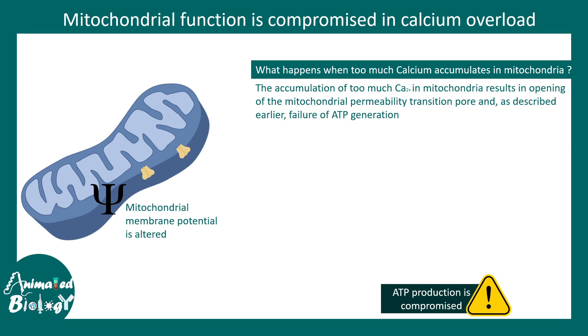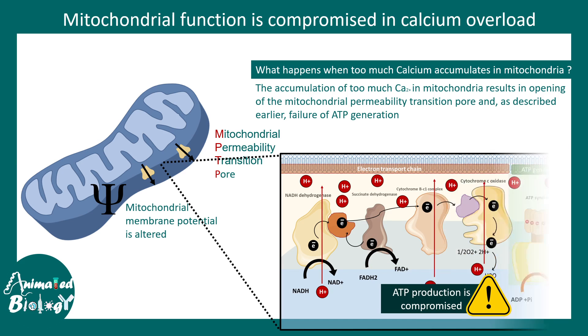ATP production is actually compromised when calcium is in excess. The mitochondria has a specific pore formation on its surface known as the mitochondrial permeability transition pore, which leaks out various substances that dissipate the mitochondrial membrane potential. We know that if the mitochondrial membrane potential is disrupted, the electron transport chain is compromised, leading to dramatically decreased ATP production. ATP depletion is itself a form of cell injury.